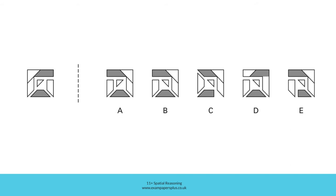In order to answer this question we're going to consider how this figure would look once it's reflected in this vertical mirror line. The resulting reflection will be represented by one of these five answer options. To help us decide on the correct answer we can take a closer look at this figure.